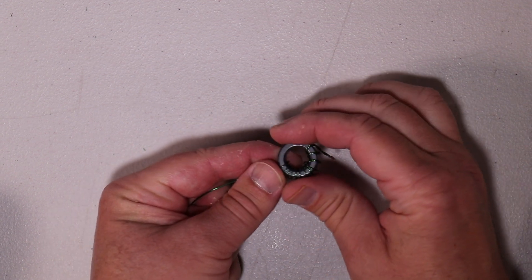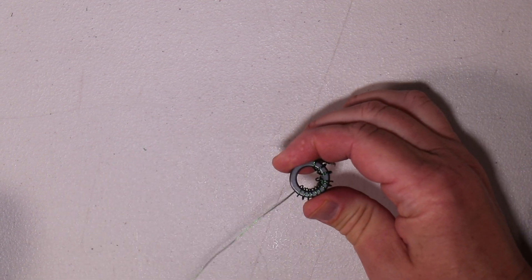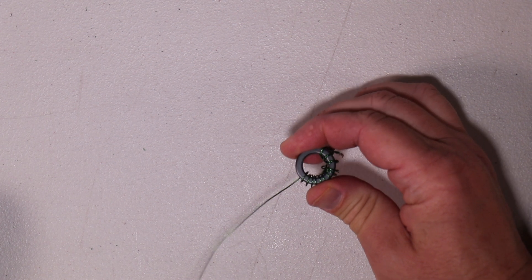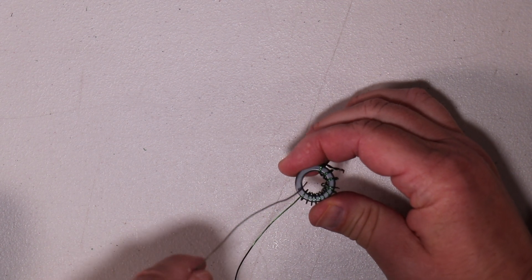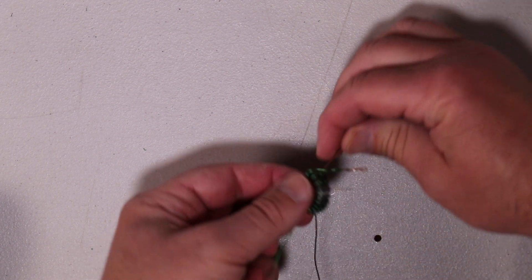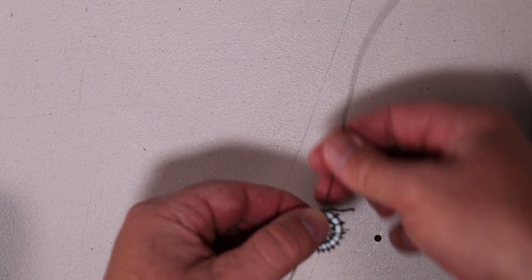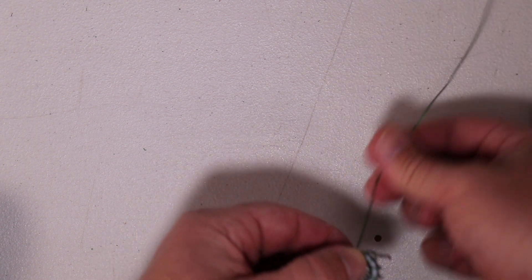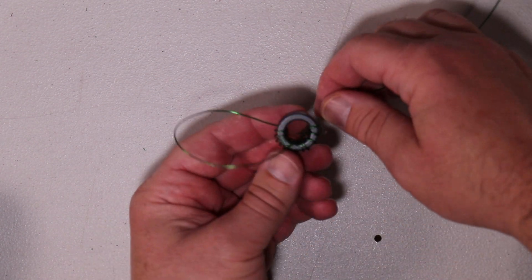Now once you've got your 12 turns you're going to do one more turn. And you're going to thread it through to the other side and then we're going to go counterclockwise 11 turns. This will give you a total of 24 turns.